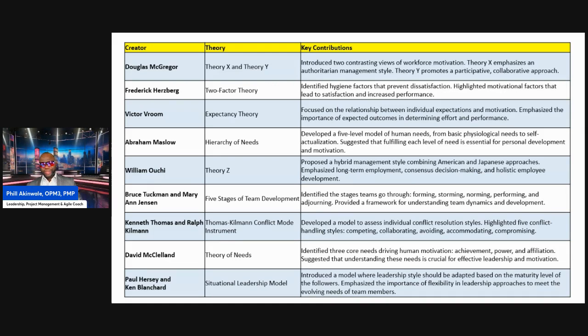We'll also cover William Alci, Bruce Tuchman, and Mary Ann Jensen, Kenneth Thomas and Ralph Killman — known as the TKI model — David McClellan's theory of needs, and Paul Hersey and Ken Blanchard's situational leadership model.